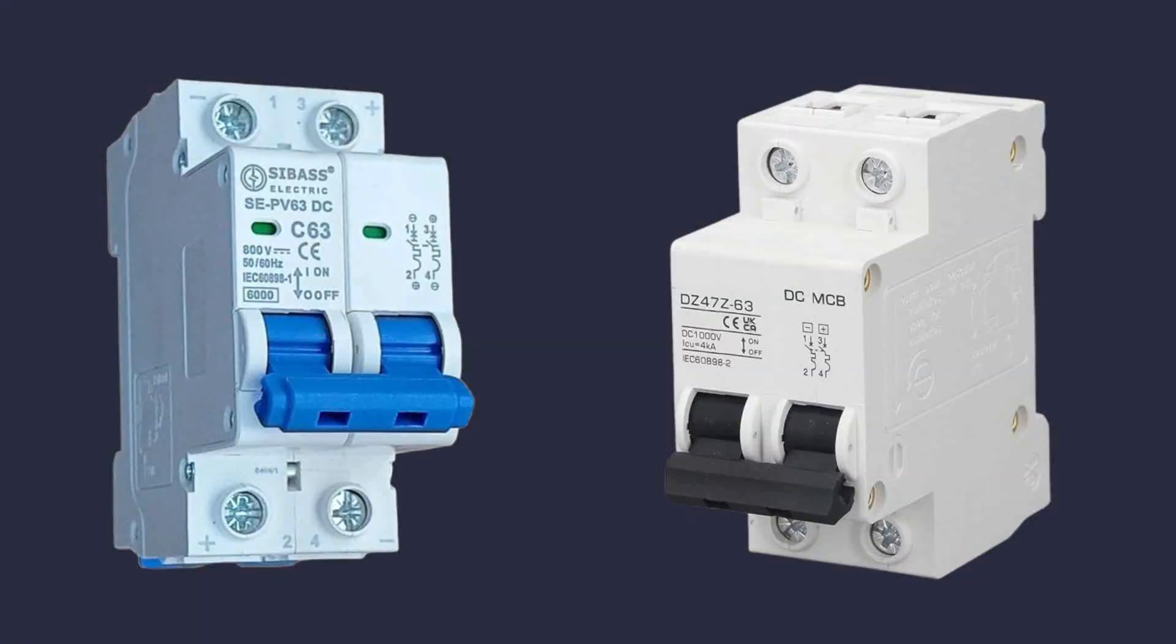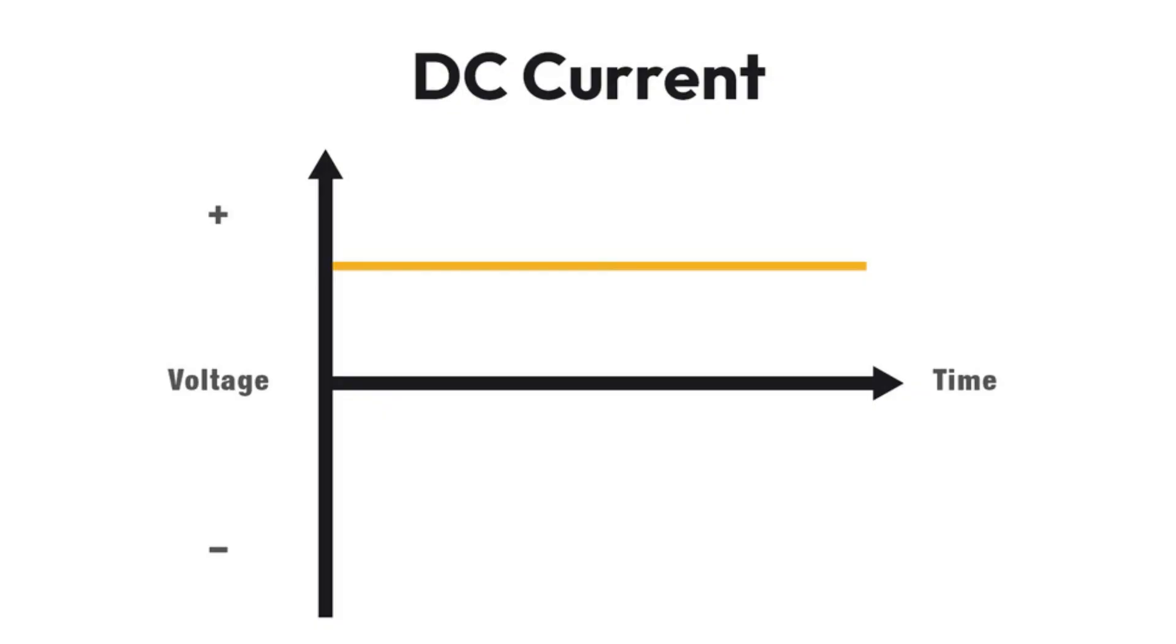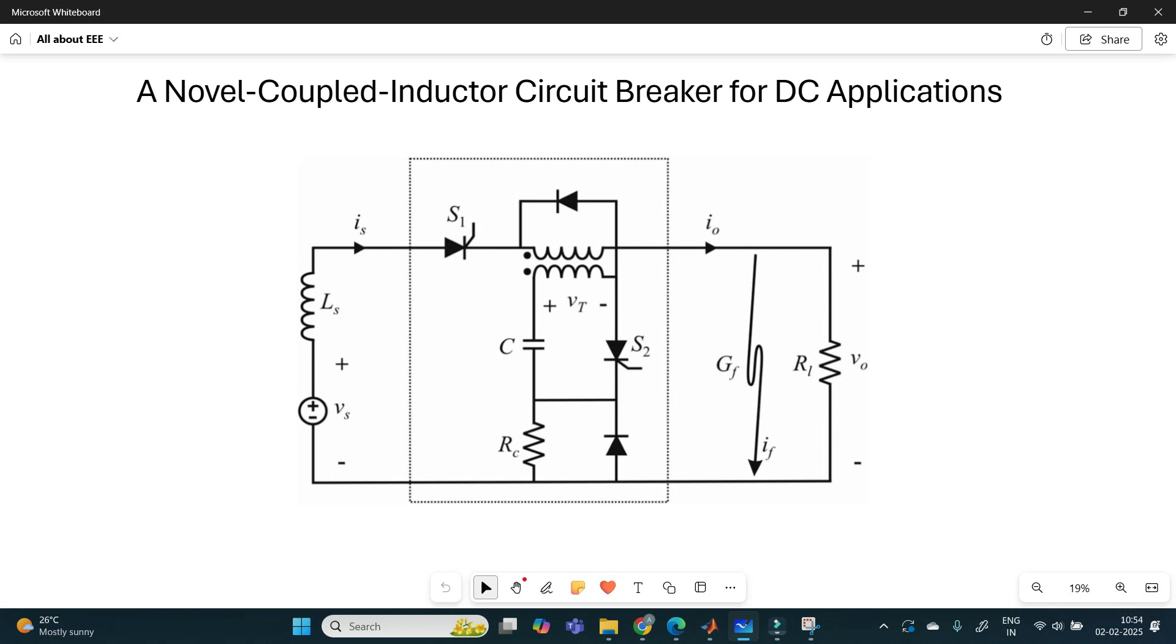However, when it comes to DC circuit breakers, many designs are still in experimental phase. The main limitation is that interrupting a current which does not have zero crossing will sustain an arc. This video introduces a new type of DC circuit breaker.